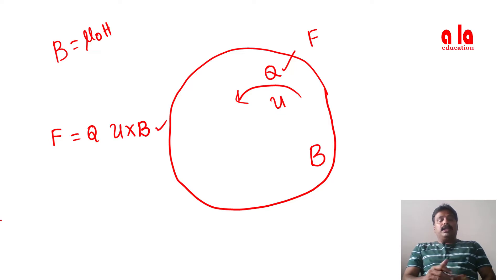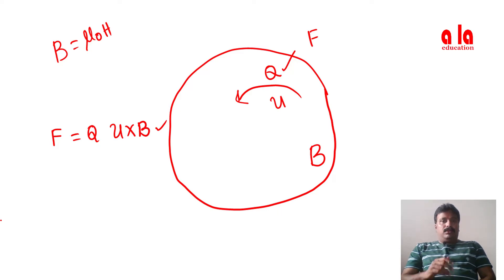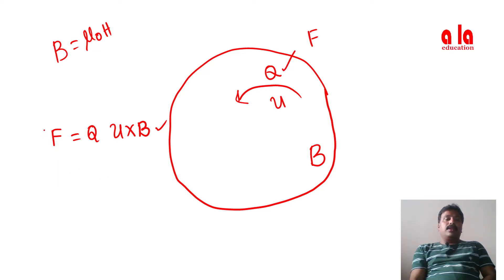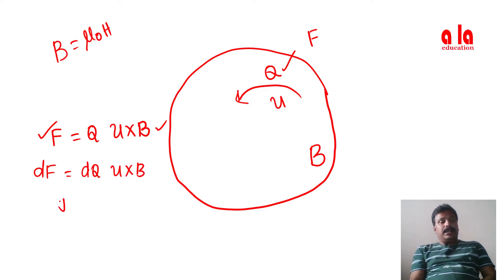Now we will link this to a current element. When a charge is moving it forms a current. As we studied in unit 1 and unit 2 regarding current density, we differentiate this equation: df is equal to dq (u cross B). We also know the relation between current density J and volume charge density ρᵥ: J is equal to ρᵥ into u.